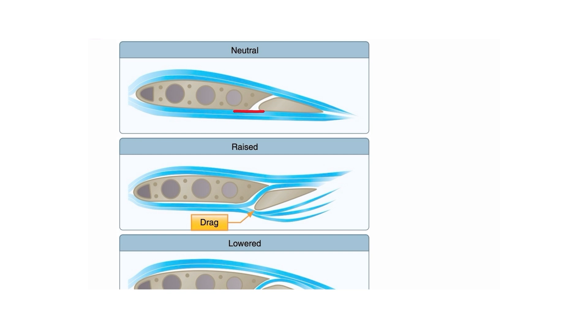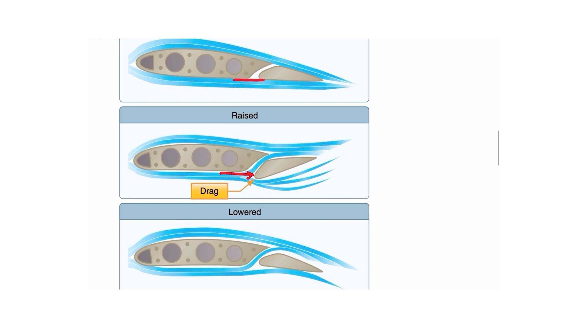And where it deflects into the airstream, it increases drag on the lower wing, countering the drag of the induced drag from the high wing. So what we're doing again here is we're adding parasite drag to the low wing to counter induced drag on the high wing.